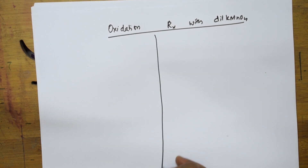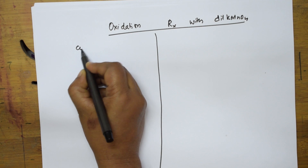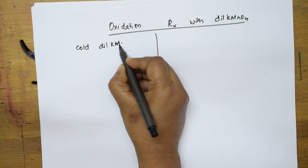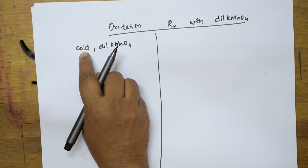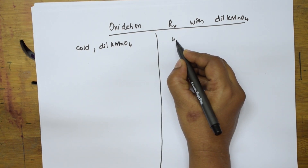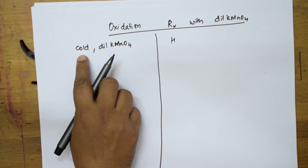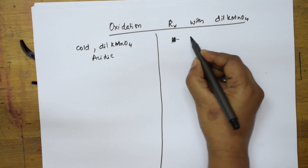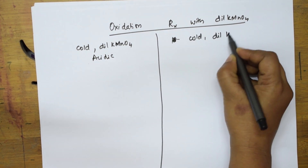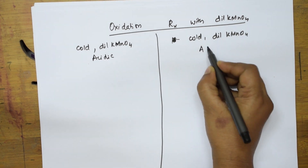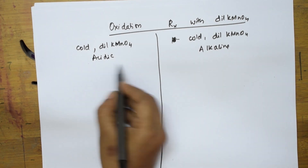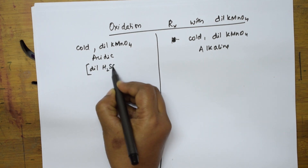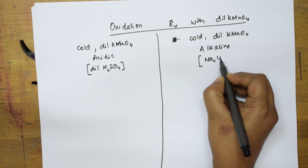Let us divide the page into two equal halves. On one side, the acidic condition — I am going to take cold and dilute KMnO4 under dilute sulphuric acid. On the other side, cold dilute KMnO4 under alkaline condition, which occurs in the presence of sodium carbonate Na2CO3. Opposite to cold is hot KMnO4. We will do cold dilute KMnO4 under acidic condition first, and then the same under alkaline condition.